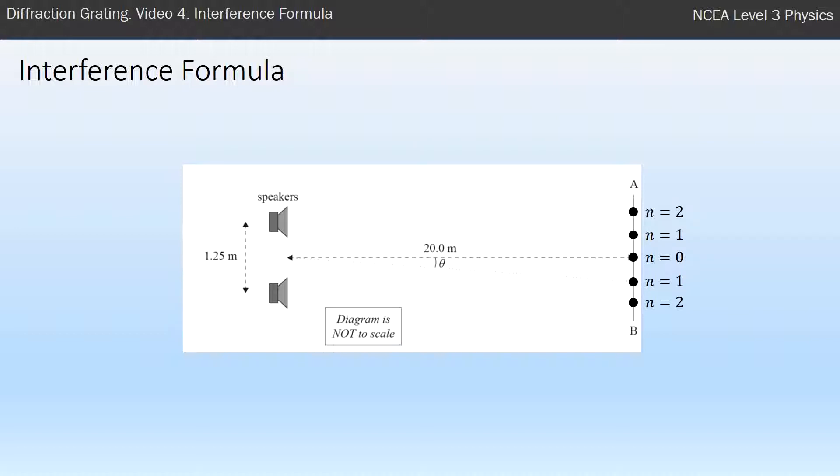So the formula which we're going to be introduced to looks like this, N lambda equals D sine theta. So what do each of these things mean and what is it used for?